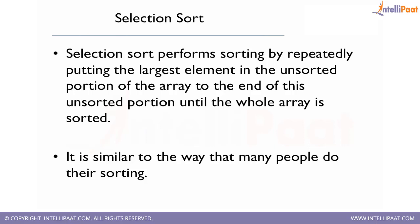Selection sort performs sorting by repeatedly putting the largest element in the unsorted portion of the array to the end of that unsorted portion until the whole array is sorted. It's a simple algorithm: it starts with the complete array, finds the largest element, replaces it to the end of the array, shrinks the array by one position, and then in the next iteration finds the largest element in the shrunk array, and so on until the whole array is sorted.